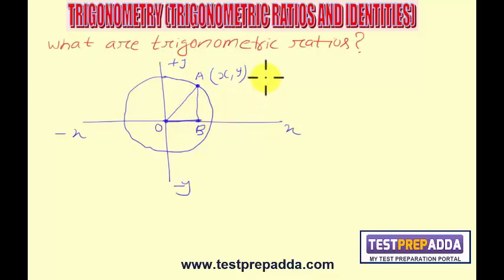Now, this AB, which is actually here Y, is called perpendicular or opposite side.